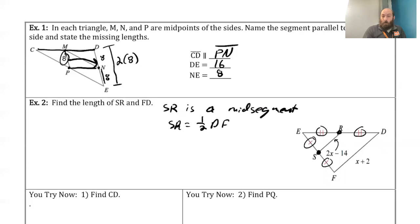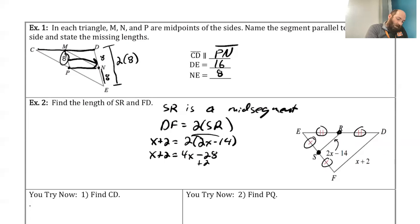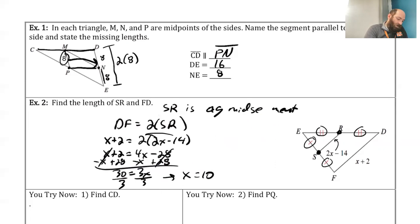That means that SR is equal to one half of DF. So now that I have that, I'm just going to set them up. Actually, you know, I'm going to change that one. Since SR is a mid-segment, I'm actually going to flip that and go the other way with it. I know that DF is equal to 2 times SR. Personally, I'd rather do this way just because I don't have to deal with a fraction then. So DF is X plus 2, and then I got 2 times SR, which is 2X minus 14. So we'll distribute that. So that X plus 2 is equal to 4X minus 28. Let's add 28 to both sides, and then we'll also subtract X from both sides. I get 30 is equal to 3X. Then we'll divide by 3 so I get X equals 10.